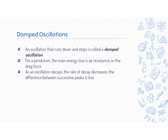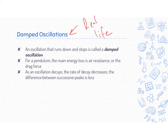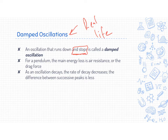What we just talked about was a frictionless situation — of course, that is not real life. The math gets a little harder when we talk about real life, so we have to understand it theoretically before we can talk about the next application: a damped oscillation. A damped oscillation is what I like to call a real-life oscillation — an oscillation that runs down and eventually stops.